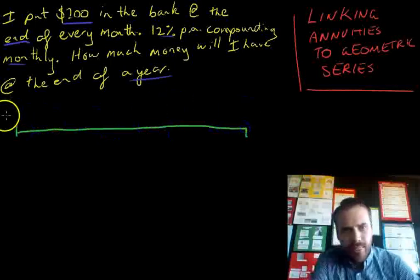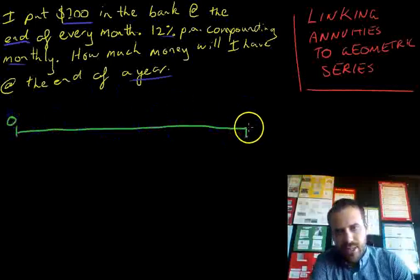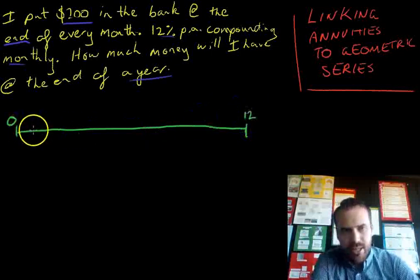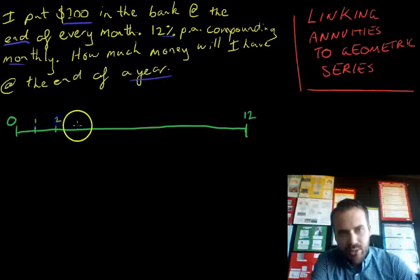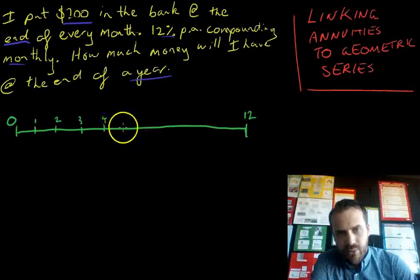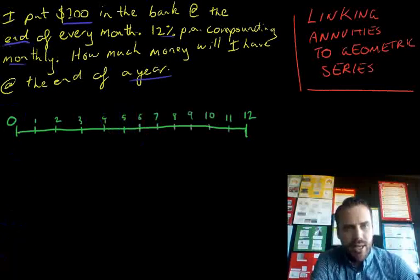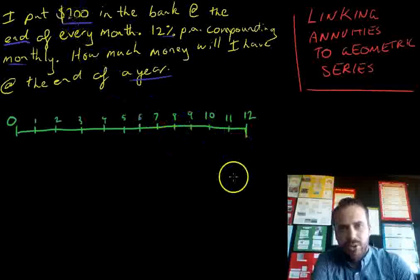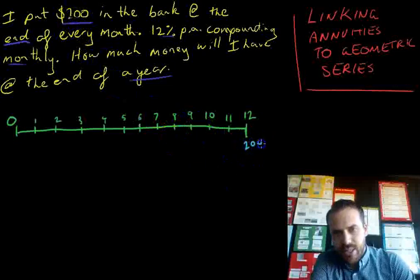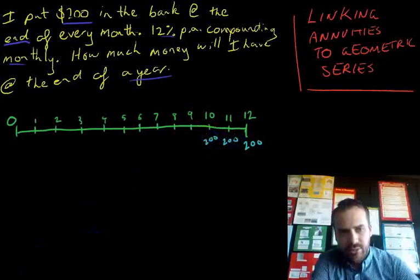This is time zero and this is at the end of the year — that's 12 months. We put marks here at the end of month one, the end of month two, month three, four, five — you get the idea. At the end of every month I'm putting two hundred dollars in.